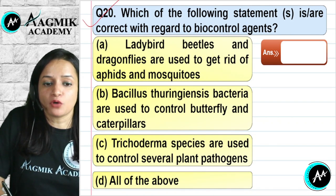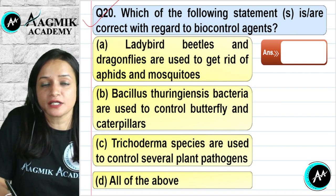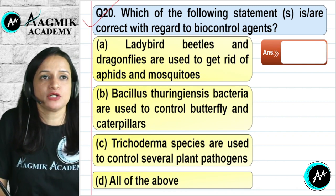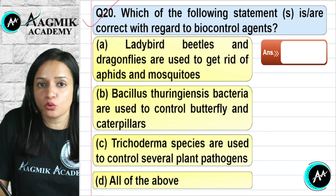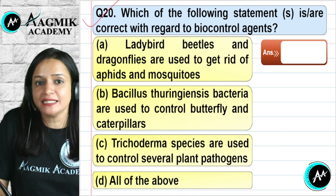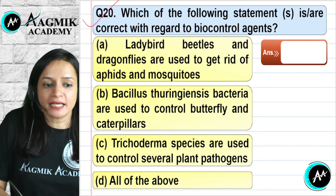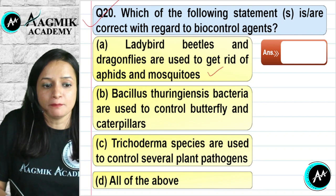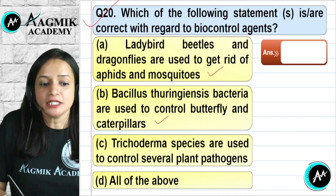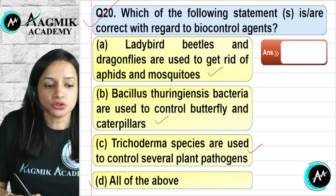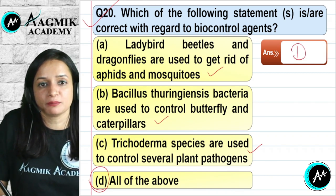Question number 20: Which statements are correct regarding biocontrol agents? Biocontrol agents attack specific insects or pests without harming crops. Lady bird beetles and dragonflies are used to get rid of aphids and mosquitoes. Bacillus thuringiensis is used to control butterfly caterpillars. Trichoderma species of fungi can be used to control several plant pathogens. All statements are correct, so the correct option is D.